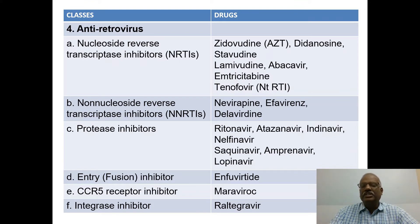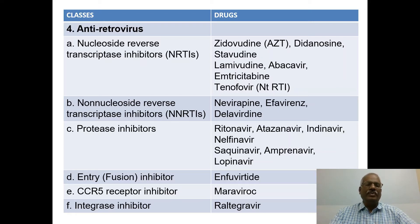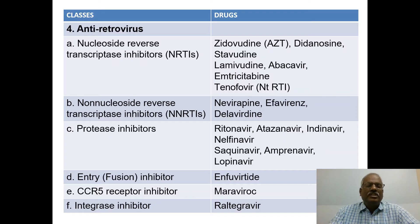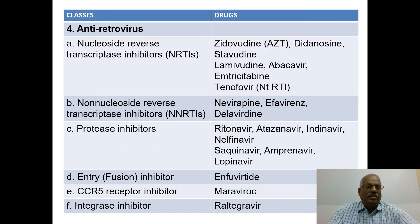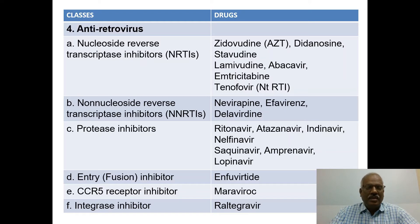Antiretroviral drugs — against HIV — can be classified into: nucleoside reverse transcriptase inhibitors, for example zidovudine, didanosine, stavudine, lamivudine, abacavir, emtricitabine, and tenofovir. Non-nucleoside reverse transcriptase inhibitors: nevirapine, efavirenz, and delavirdine. Protease inhibitors: atazanavir, indinavir, nelfinavir, saquinavir, amprenavir, lopinavir. Fusion inhibitors and CCR5 co-receptor inhibitor maraviroc. Integrase inhibitor: raltegravir.